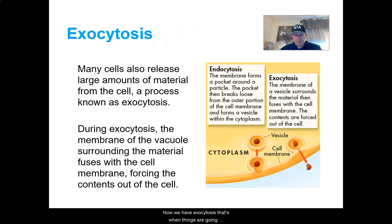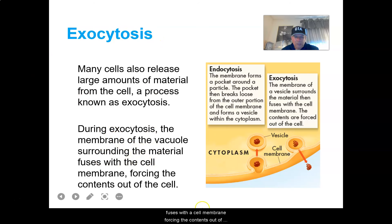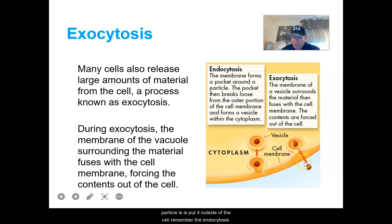Now we have exocytosis — that's when things are going to be released from the cell. Many cells release large amounts of materials from the cell in a process known as exocytosis. During exocytosis, the membrane of the vacuole surrounding the material fuses with the cell membrane, forcing the contents out of the cell. The outside of the vesicle becomes part of the cell membrane and then the particle is put outside the cell. Remember, in endocytosis the cell membrane circles whatever is coming into the cell and makes a vesicle.